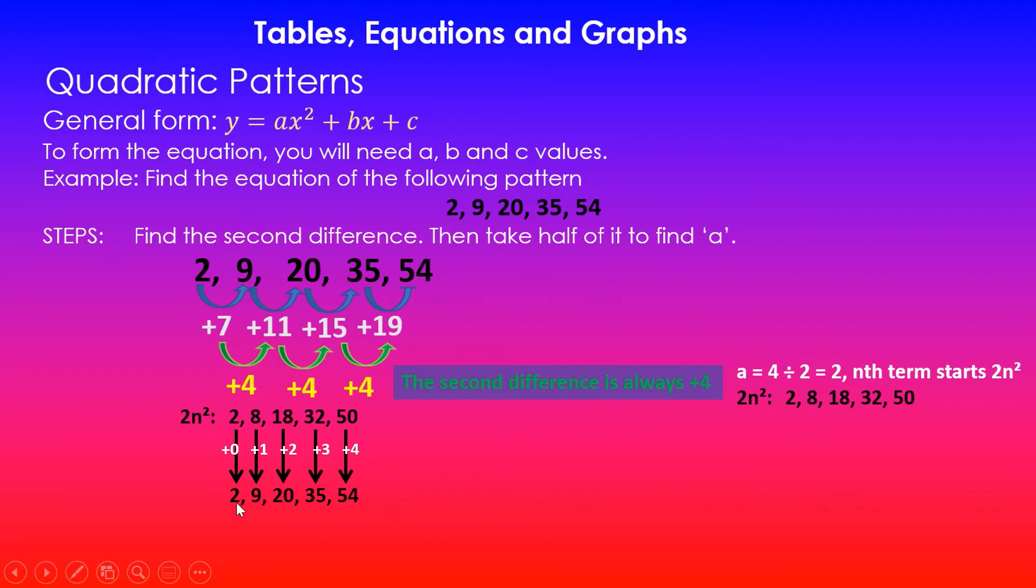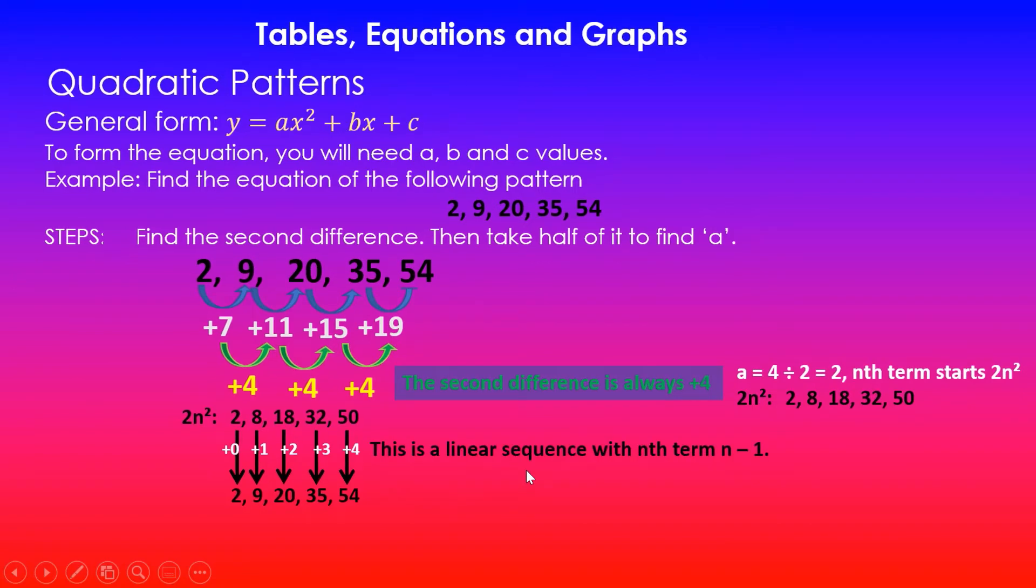So hopefully you can see that there is a sequence here. 2 plus 0 gave you 2, 8 plus 1 is 9, 18 plus 2 is 20. So you can see that it's not going up by a constant amount, but this is a linear pattern, which will be part of the bx and c term. So we can use that to find it. This is a linear sequence and the nth term of this sequence, I've done videos on how to find the equations of a linear pattern. If you haven't already, please do check that one out.